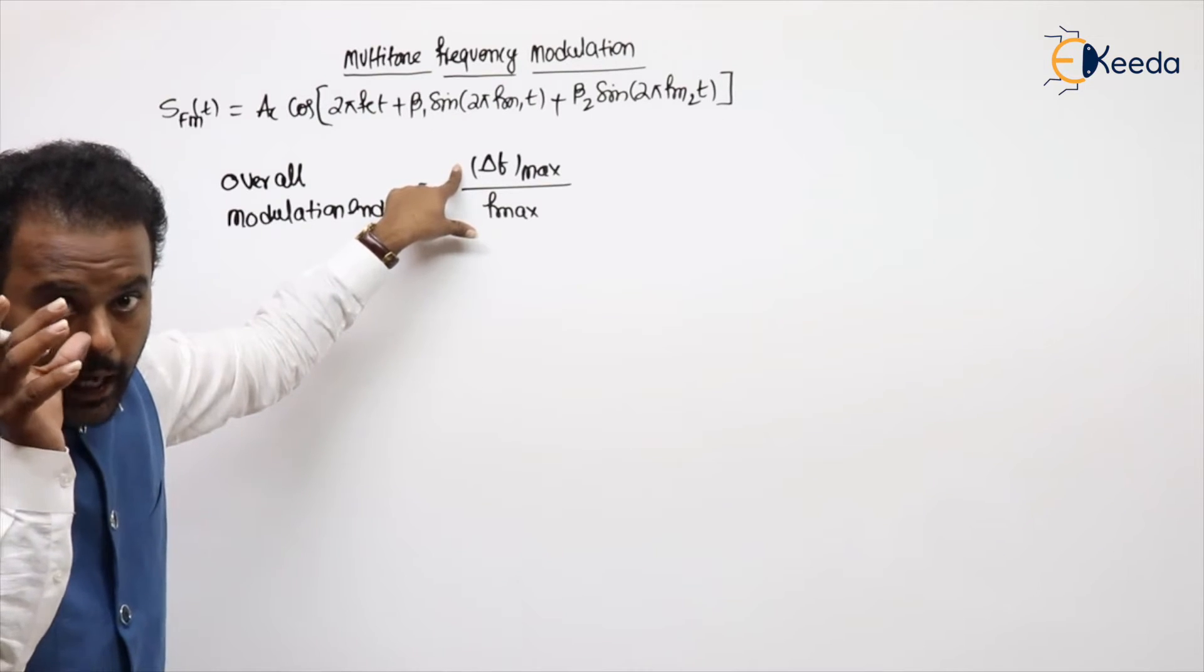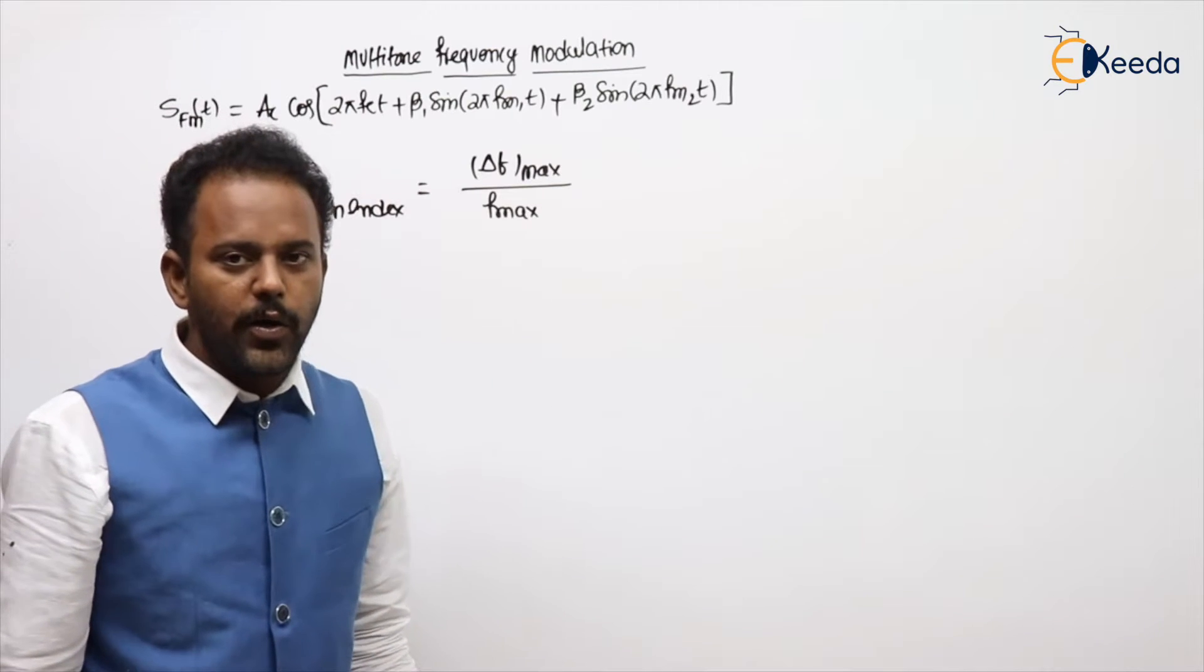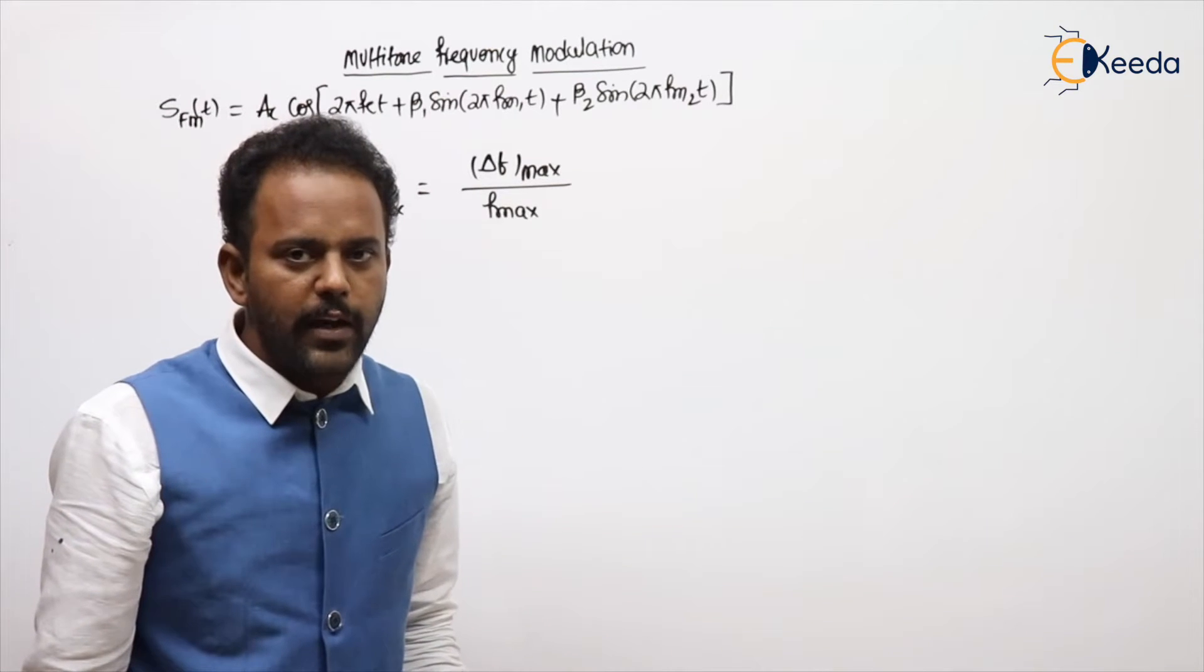f max means maximum frequency in the message because message is having multiple frequencies, and Δf max means maximum frequency deviation.